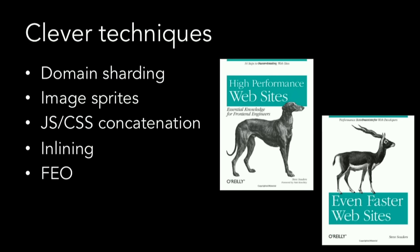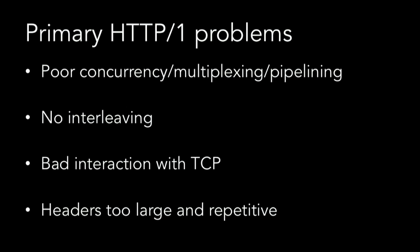Something needed to be addressed at the protocol level. The primary problems identified with HTTP1 were a bad concurrency or multiplexing model — you couldn't interleave things, so everything had to come back in order. It didn't interact with TCP very well, and there was a general header bloat problem. Enter HTTP2, ratified as RFC 7540 just over a year ago. I'm going to give you basically a five-minute crash course on it — at the end, you're all going to be experts.